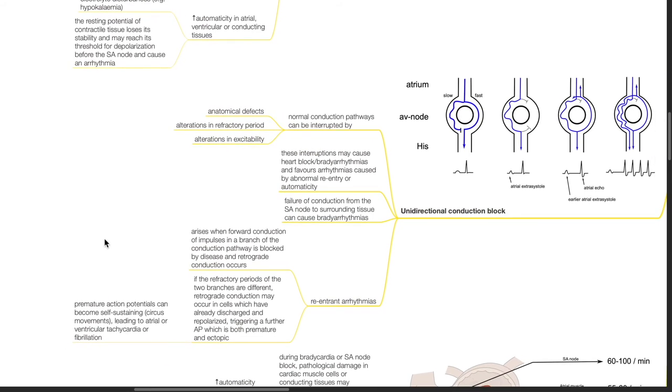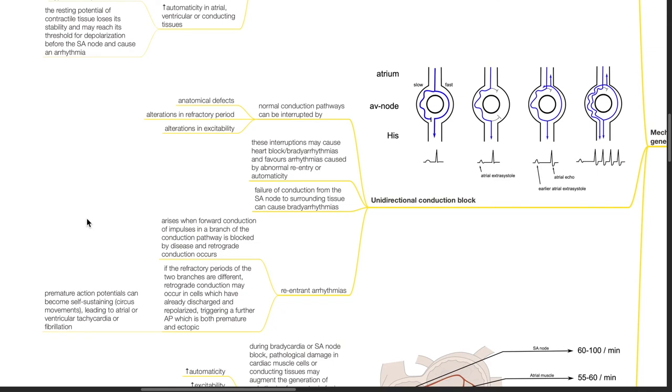The next mechanism is unidirectional conduction block. Normal conduction pathways can be interrupted by anatomical defects, alterations in refractory period, and alterations in excitability. These interruptions may cause heart block or bradyarrhythmias and favor arrhythmias caused by abnormal re-entry or automaticity. Failure of conduction from the SA node to surrounding tissue can cause bradyarrhythmias. Re-entrant arrhythmias arise when forward conduction of impulses in a branch of the conduction pathway is blocked by disease and retrograde conduction occurs. If the refractory period of the two branches are different, retrograde conduction may occur in cells which have already discharged and repolarized, triggering a further action potential which is both premature and ectopic. Premature action potentials can become self-sustaining in circus movements leading to atrial or ventricular tachycardia or fibrillation.